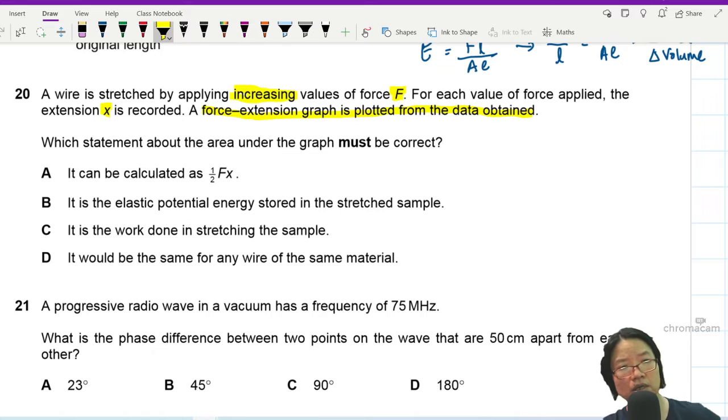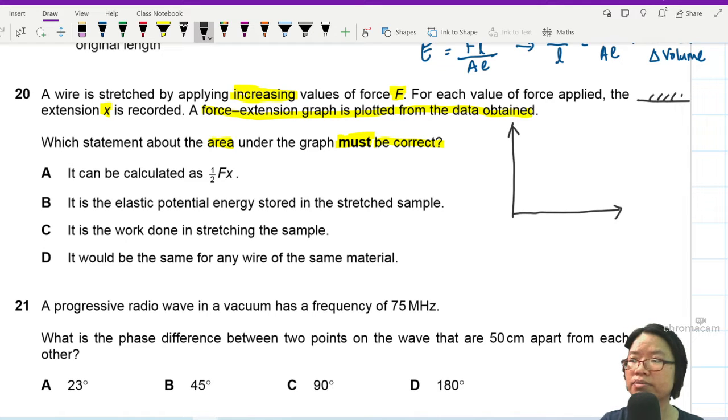Which statement about the area under the graph must be correct? Right, so what they're saying here is I'm doing an experiment where I apply a force on a wire. Let's say I have a wire and I hang the wire here. I will apply a force to stretch out the wire. And then I'll get whatever data I get, I plot a graph.